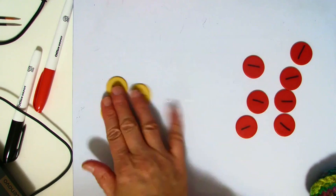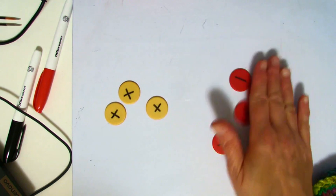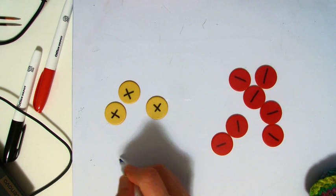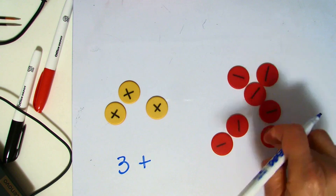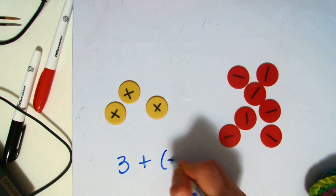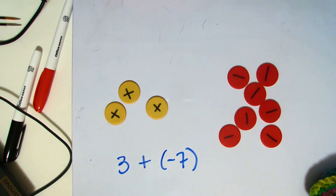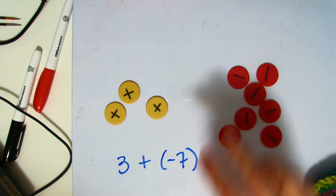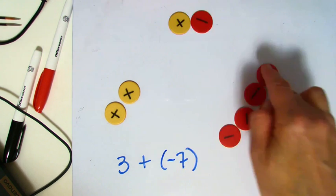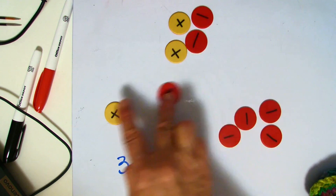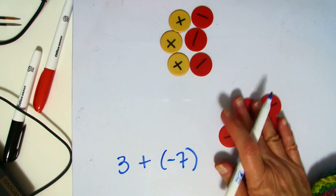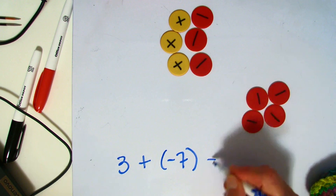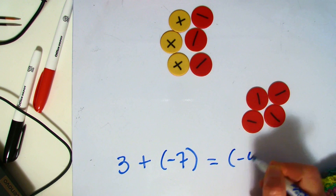So in this case, we have three positives. And we're going to add to that negative seven. So three plus negative seven. Again, modeling this type of problem, we're going to make pairs. And what's left is going to be negative four.